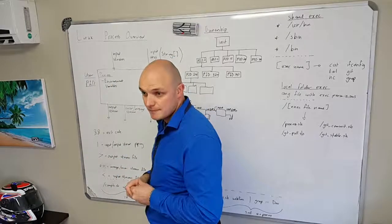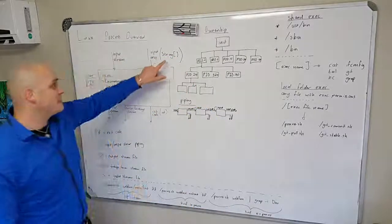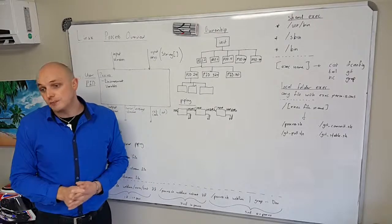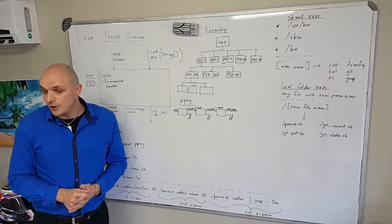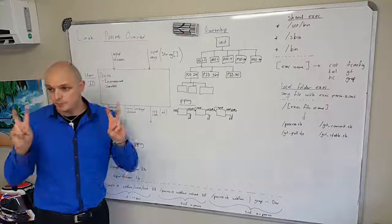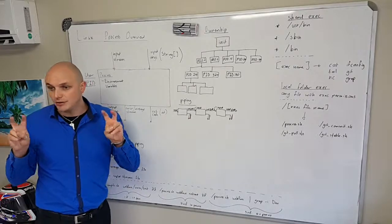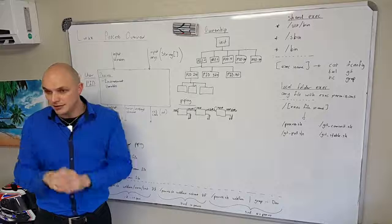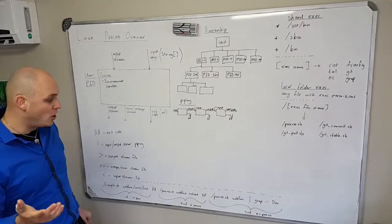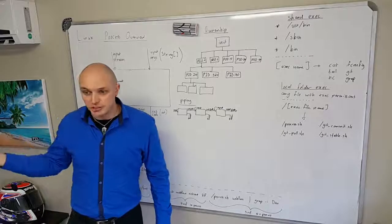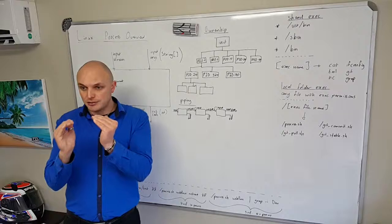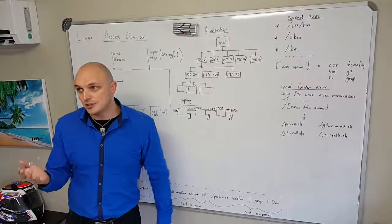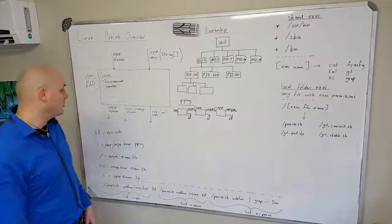The first input is your input arguments — basically a string array of arguments. When you start a process from the command line, your arguments are separated by space characters. If you want to pass an argument that itself contains a space, you put quotes around it and everything between the quotes is seen as one argument. For instance, a command like process.sh webface restart — webface is the first parameter and restart is the second.